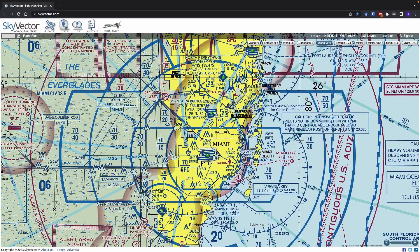Here are our numbers. SFC stands for surface. So here the class B airspace extends from the surface to 7,000 feet — remember we need to add two zeros to the end of this number — 7,000 feet MSL. In this case, it actually is approximately 7,000 feet AGL as well, because Miami airport is almost at sea level. The ocean is right here, this area is fairly flat, and the elevation of the land is not going to be too much above sea level.